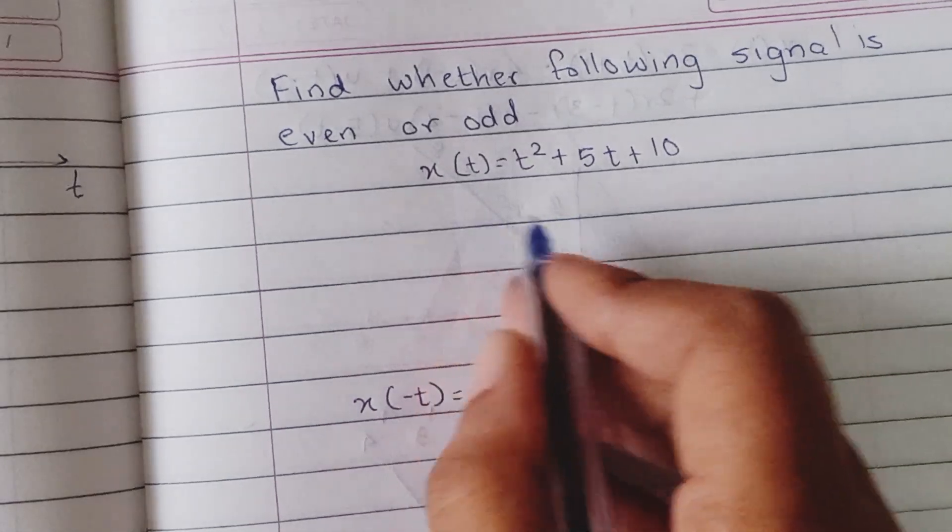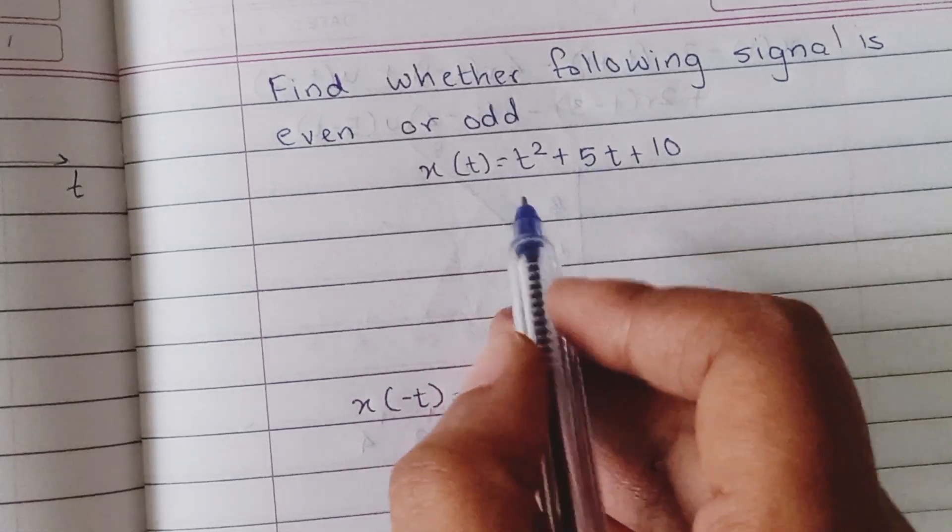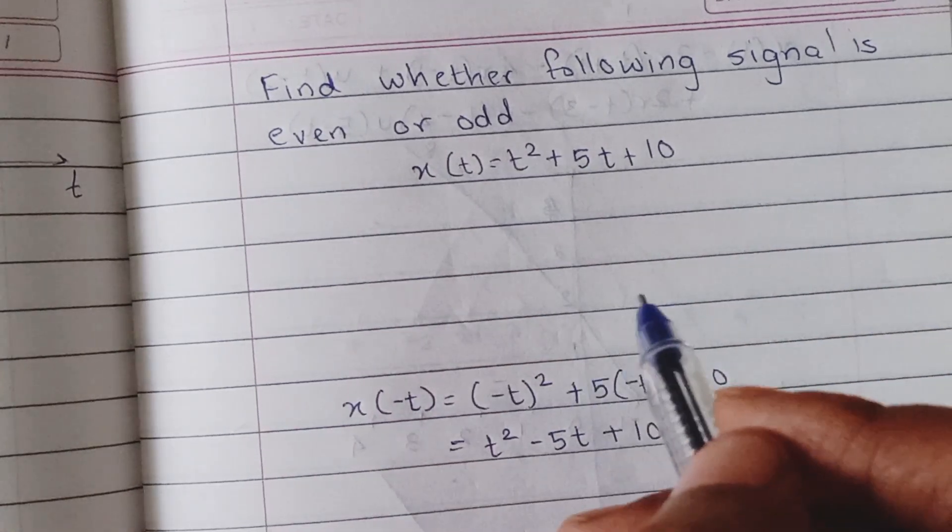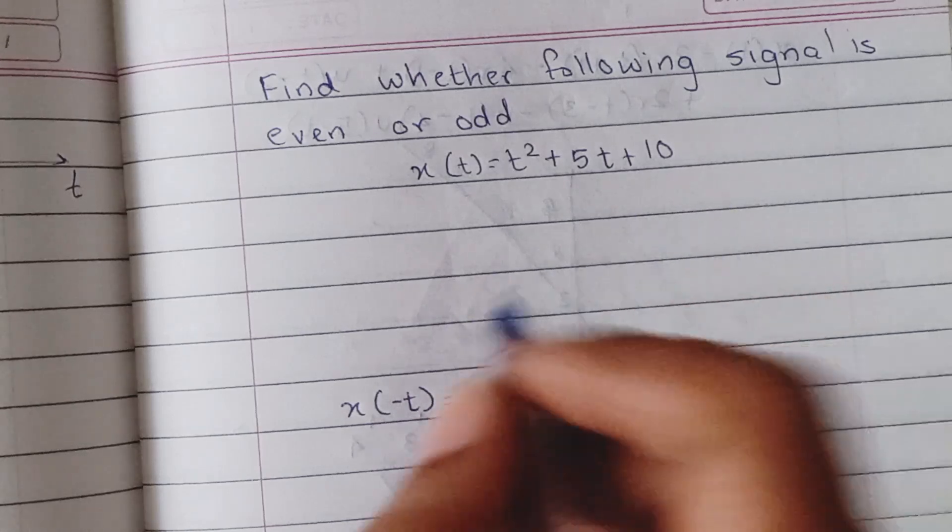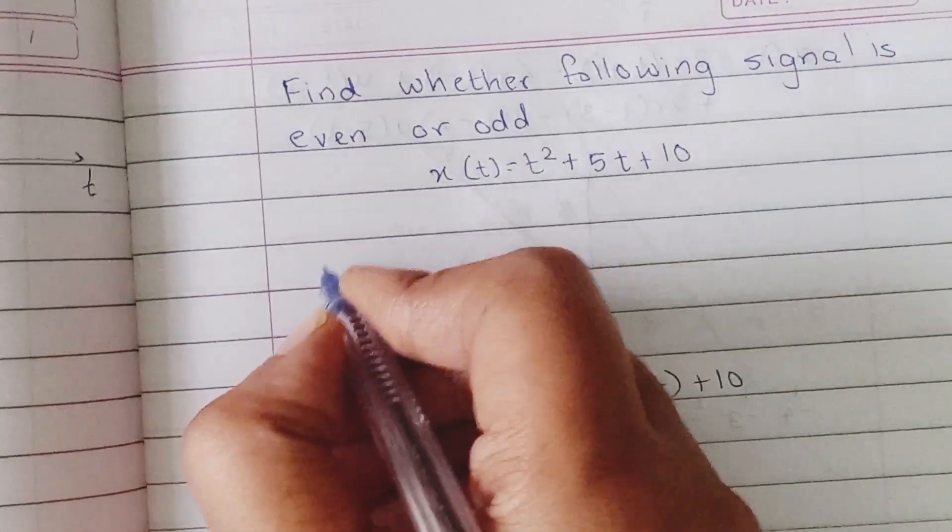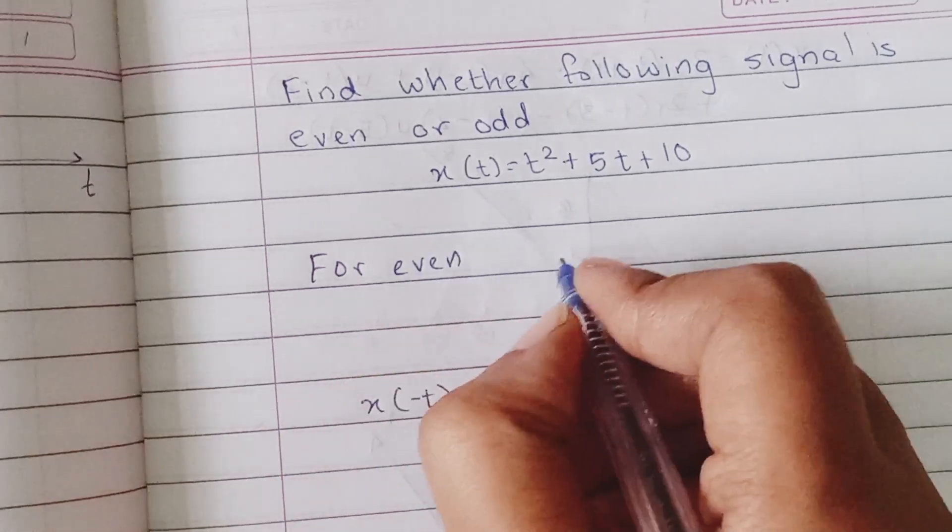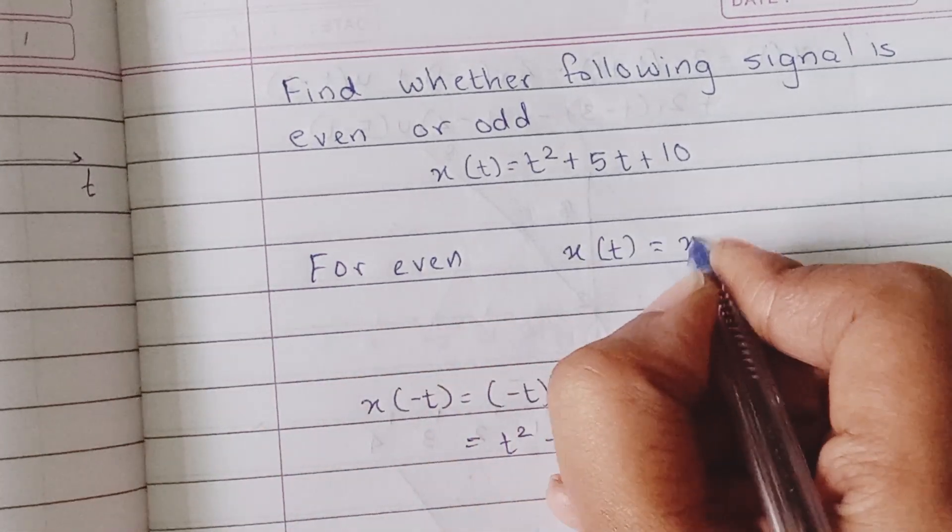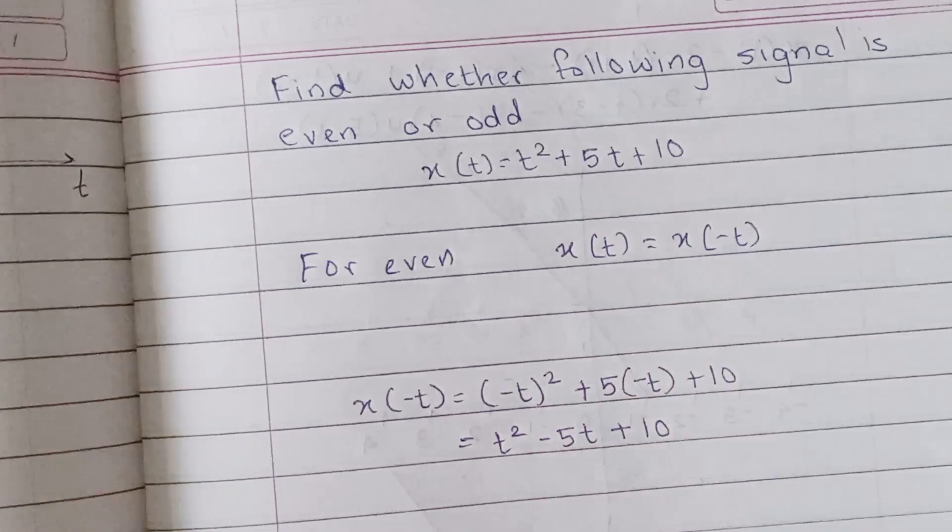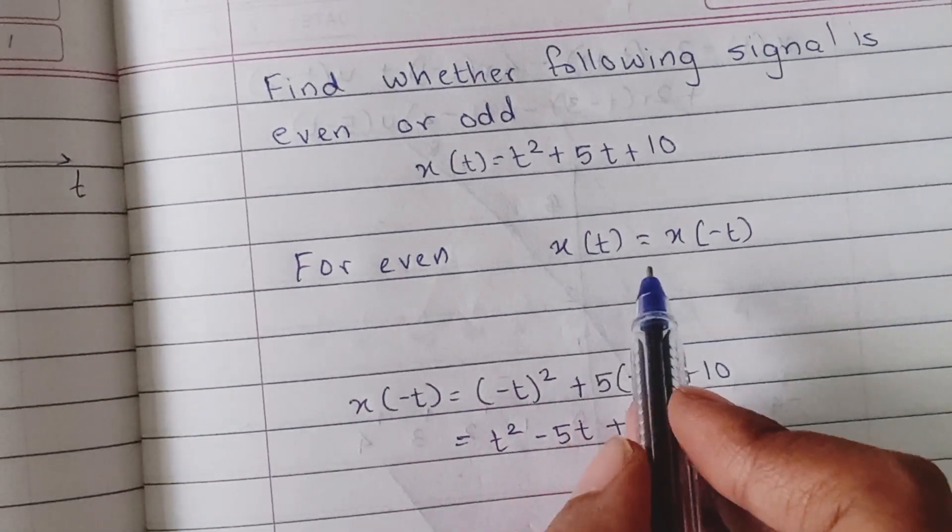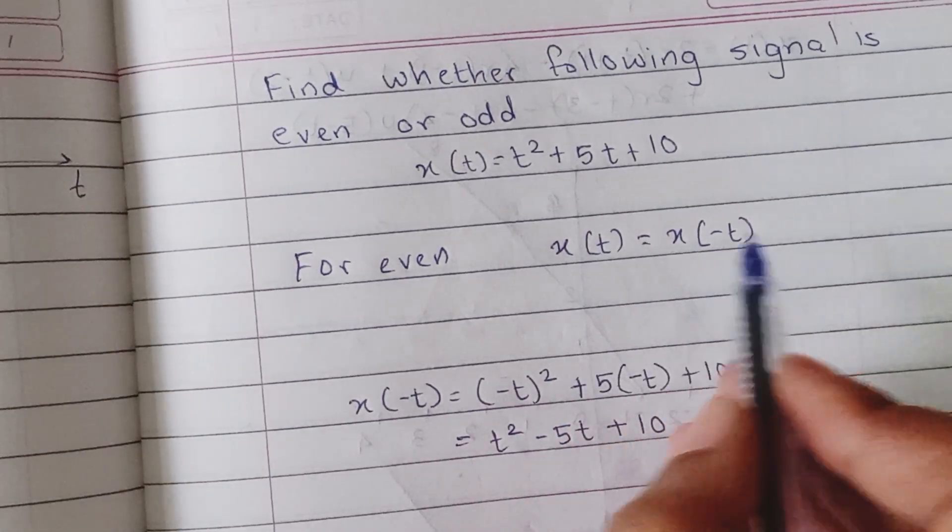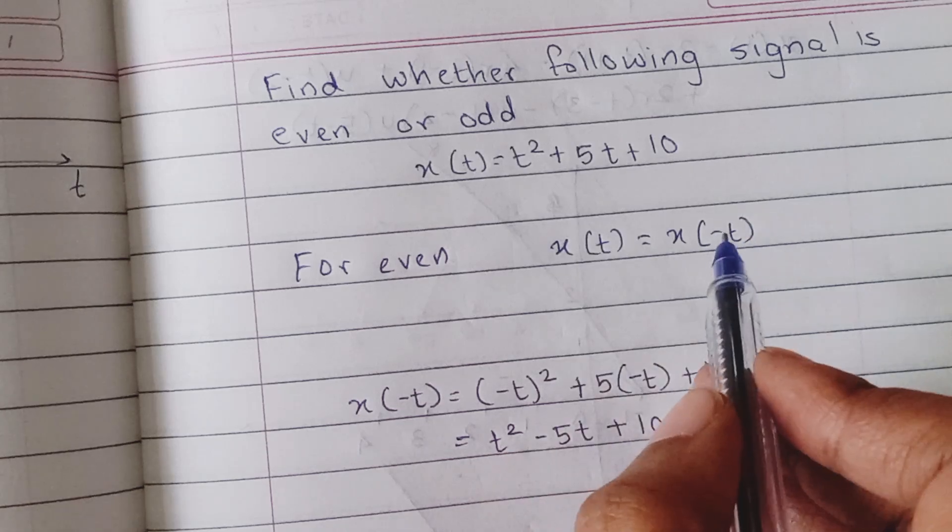So here we are given a signal x(t) and we have to find out whether the signal is even or odd. Now to find out if a signal is even or odd, for even what is our condition? x(t) should be equal to x(-t). That is, the original signal should be equivalent to its reversed version. Then we say it's an even signal.